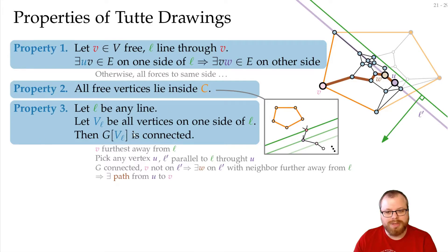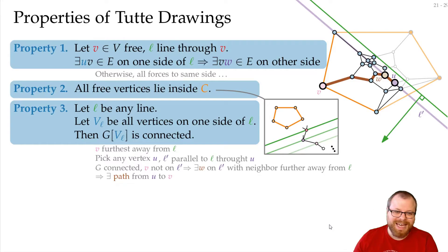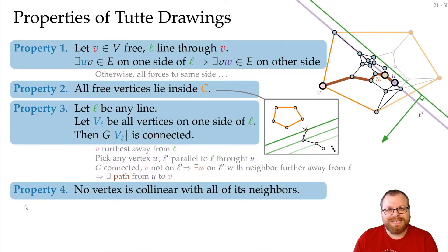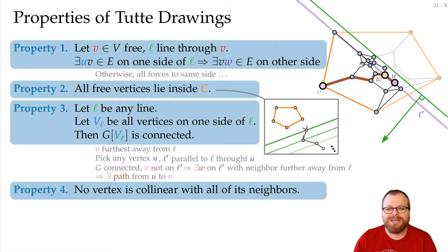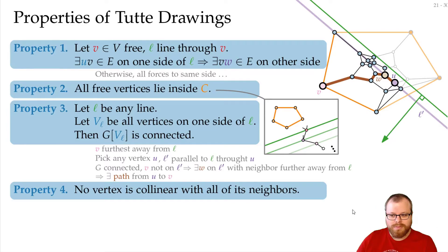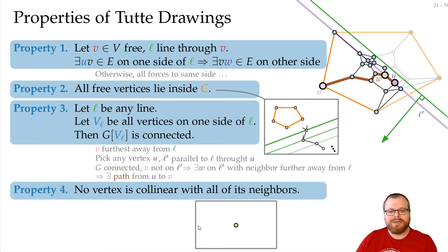This is probably the most important property we need. There is one more: Property 4 says no vertex is collinear with all of its neighbors. This means the situation where all neighbors of a vertex lie on a single line cannot happen. To prove it, assume some vertex is collinear with all its neighbors. We look at all vertices on this line reachable from our vertex by moving along the line — not only immediate neighbors but transitively. This forms a connected component on the line.